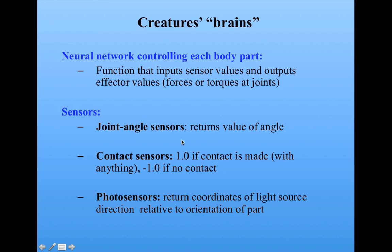The sensors included joint angle sensors — each joint reported the value of its angle. Contact sensors, which were 1.0 if contact is made with anything, minus 1 if no contact. And photosensors, which returned the coordinates of light sources relative to the orientation of the part. So you can see it's getting kind of complicated. And of course, these were all virtual — this is not a real robot; they're all computer simulated.